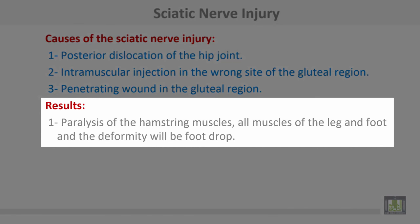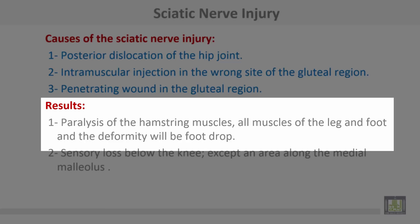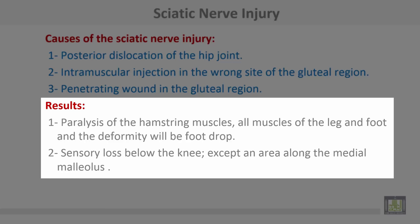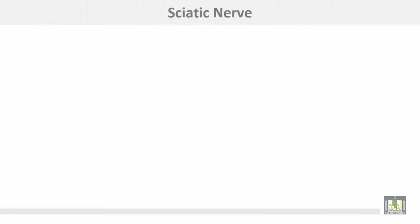Results of sciatic nerve injury include paralysis of the hamstring muscles, all muscles of the leg and the foot, with the deformity of foot drop. There is also sensory loss of sensation below the knee, except along an area on the medial side.